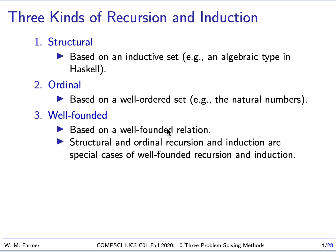There are three kinds of recursion and induction. Structural, based on an inductive set - a set that is defined inductively, or recursively. An example would be an algebraic type in Haskell. The second kind is ordinal, based on a well-ordered set. We have seen an example: the natural numbers with the less than relation. In computing, structural recursion and induction is very common. Ordinal recursion and induction is less common and naturally comes up when you have very complicated situations. Finally, there is well-founded recursion and induction, based on a well-founded relation. This is the most general way of thinking about recursion and induction, and structural and ordinal recursion and induction are special cases of this approach.